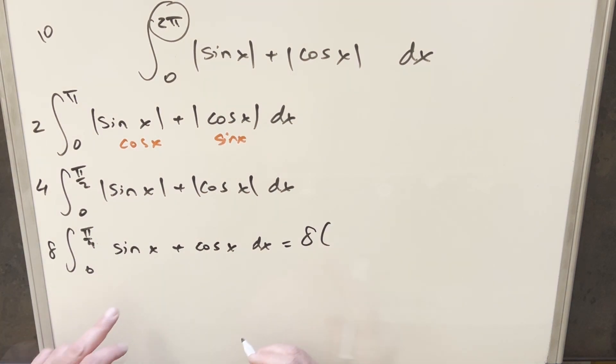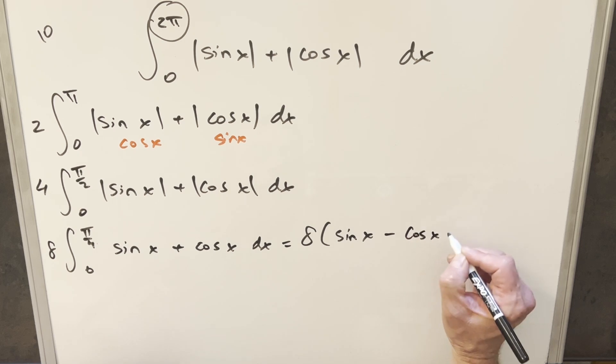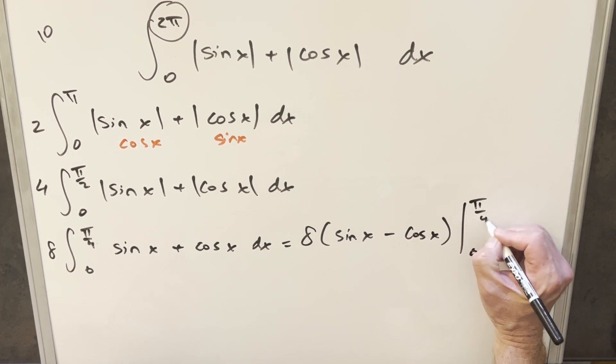And then we can just go ahead and integrate this. We're going to have this 8 out front. I'm just going to go out of order. So integrating cosine x, this is going to become sine x. Integrating sine x, that's going to be minus cosine x. And we just need to evaluate from 0 to π over 4.